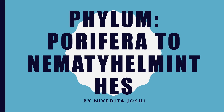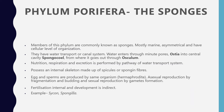We begin with Porifera — the phylum of sponges. As you know, sponges are porous. Because their body is porous, members of this phylum are called sponges. Most of them are marine and asymmetrical, and they have the cellular level of organization.